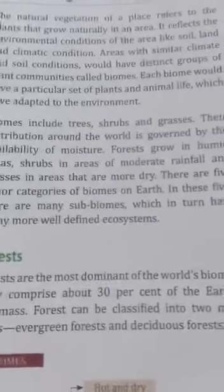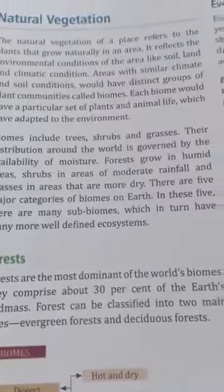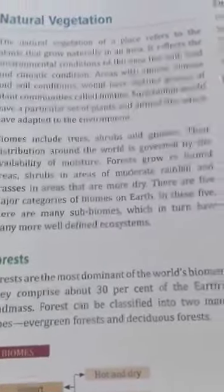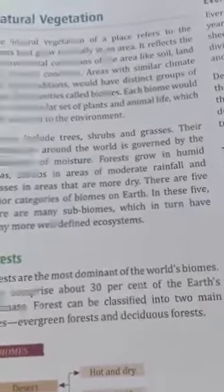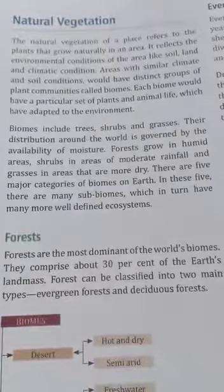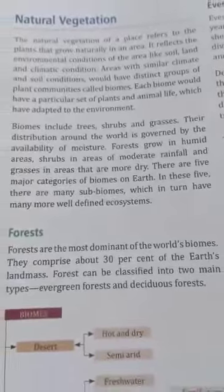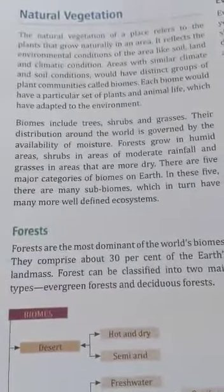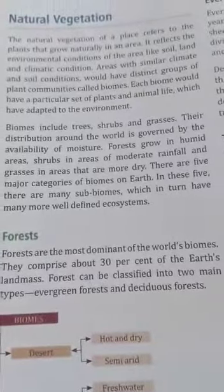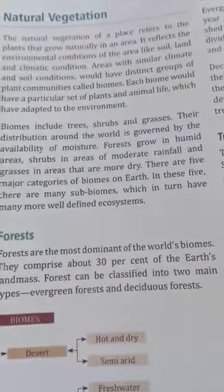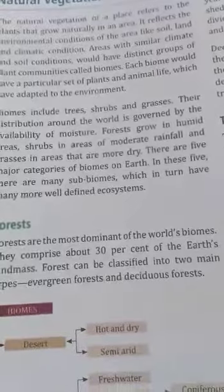Now let us learn the next topic, that is natural vegetation. Many varieties of plants grow on Earth. Plants need air, water, sunlight and nutrients from the soil to grow and prepare their own food. The growth of vegetation is controlled by moisture and temperature. These essential things vary from place to place, thereby giving rise to different types of vegetation.